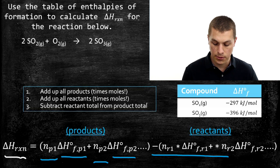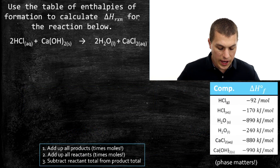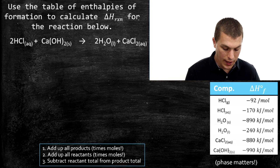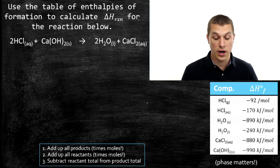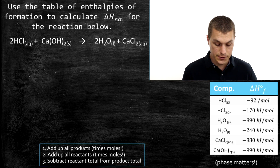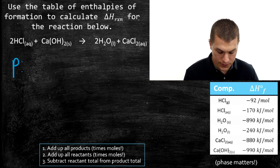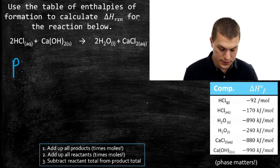Let's do one more practice problem. We have the combination of hydrochloric acid with calcium hydroxide going to water and calcium chloride. Again, we want to know what the enthalpy of reaction is. I'll split this up: products first, then reactants, and subtract them.